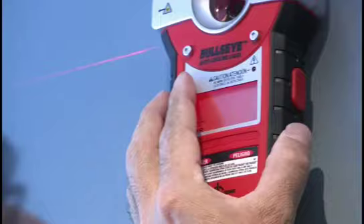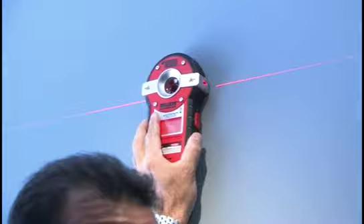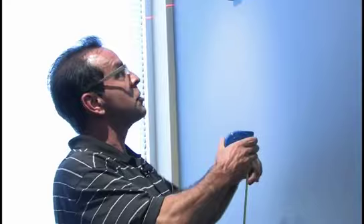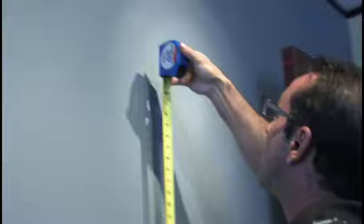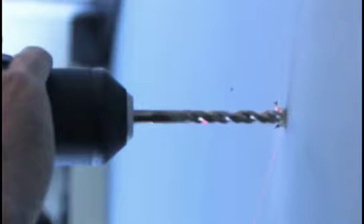I'm using a laser level here. It's not required, however it makes it a little easier to get the top line level. Otherwise, you would have to measure the distance from the floor to the hole. We need to drill a quarter-inch hole for the anchors. Tap these in.